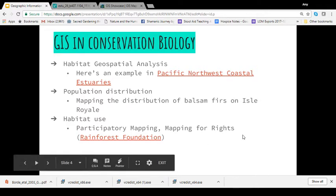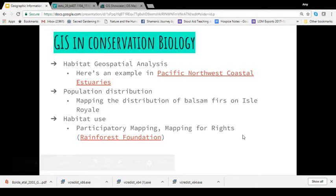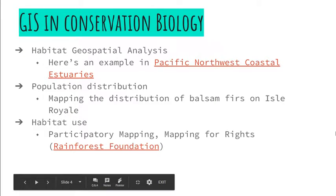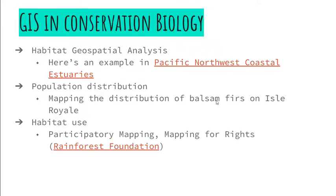Another way that GIS can be used in conservation biology is for population distribution. For example, I did a report on balsam firs on Isle Royale and could potentially use a GIS map to show trees in different regions of the island and then overlay that with past and current times that the trees have populated different regions.